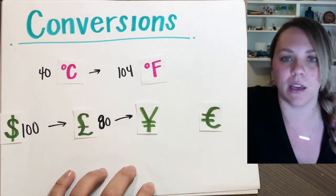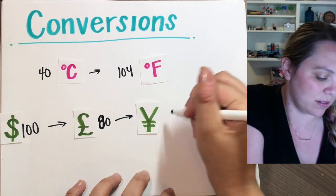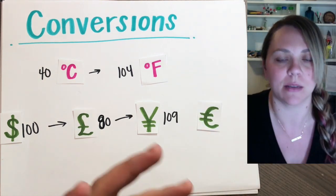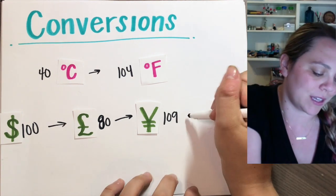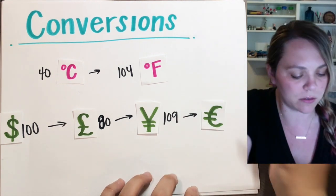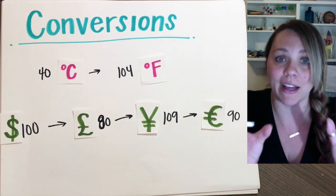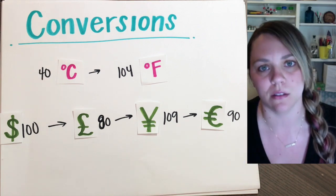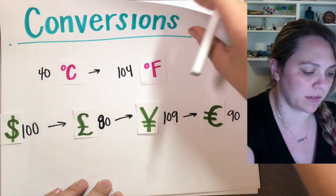If you were traveling to Japan and using the yen, you would actually have 109 yen. Again, same amount of money, just a different number because you're using different units. If I was going to change it into euros, that's 90 euros — same value of money, different units that I have to convert to. So there you go: conversions.